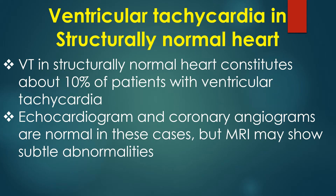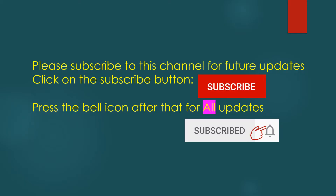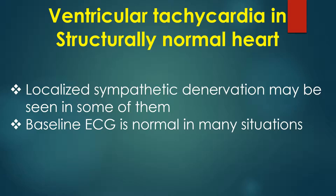VT in structurally normal heart constitutes about 10% of patients with ventricular tachycardia. Echocardiogram and coronary angiograms are normal in these cases, but MRI may show subtle abnormalities. Localized sympathetic denervation may be seen in some of them. Baseline ECG is normal in many situations.